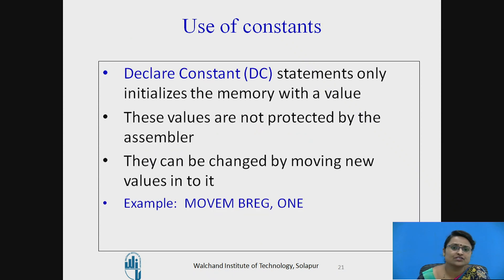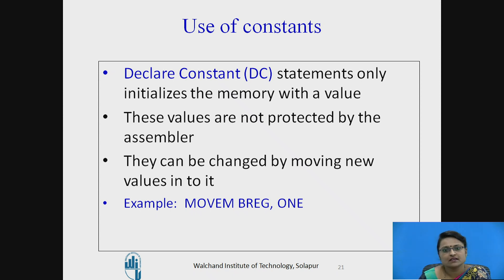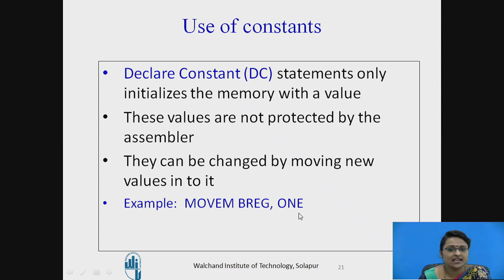The Declare Constant statement initializes a memory word with a value — whatever is specified in single quotes by the DC statement. However, these values are not protected by the assembler, meaning we can change the value by writing a statement. For example, after declaring 1 as a memory word, the statement 'MOVE M B, R1' moves the contents of register B to memory address 1, changing its value. Hence it is not protected by the assembler.